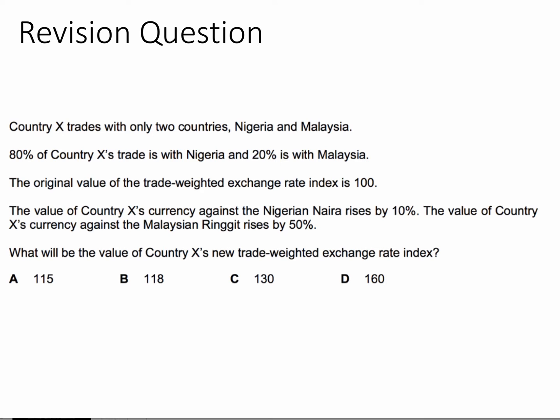So this is one of those questions where we're asked to calculate a trade weighted exchange rate index. The crucial point is that the answer is B: 118. The index has gone up by 18%. The crucial point is that the naira is the most significant currency — it's 80% — whereas just 20% is the ringgit for Malaysia.